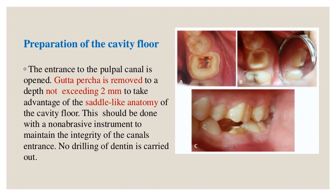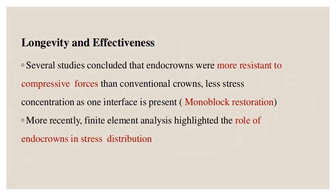Preparation of the cavity floor: the entrance to the pulpal canal is opened and gutta-percha is removed to a depth not exceeding 2 millimeters, to take advantage of the saddle-like anatomy of the cavity floor. This should be done with a non-abrasive instrument to maintain the integrity of the canal entrance — no drilling of dentin is carried out. Studies concluded that endocrowns were more resistant to compressive forces than conventional crowns, with less stress concentration as only one interface is present (monoblock restoration). Finite element analysis has highlighted the role of endocrowns in stress distribution.